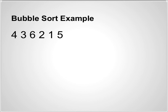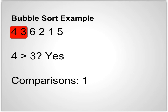And now to an example of Bubble Sort. Given the sequence of numbers 4, 3, 6, 2, 1, 5, let's perform Bubble Sort on it. As previously stated, we begin by comparing the first element with the second element. As we can see, 4 is greater than 3, which means that in the next step we're going to have to switch these two numbers.